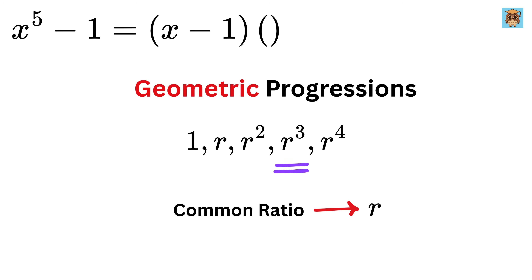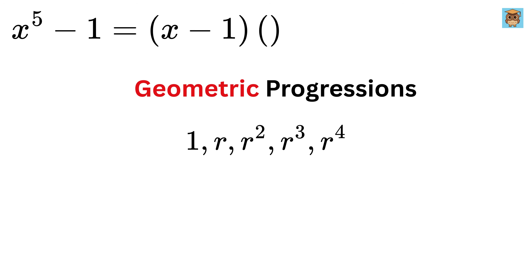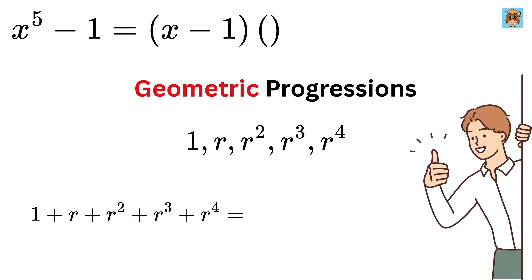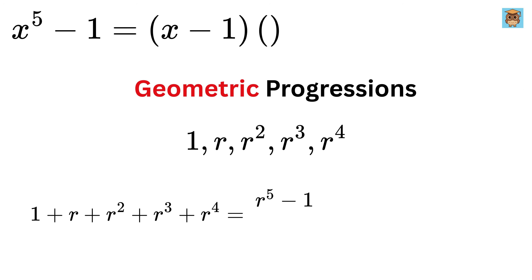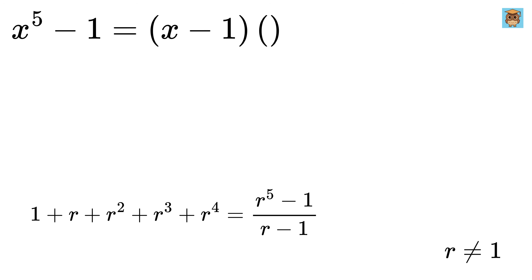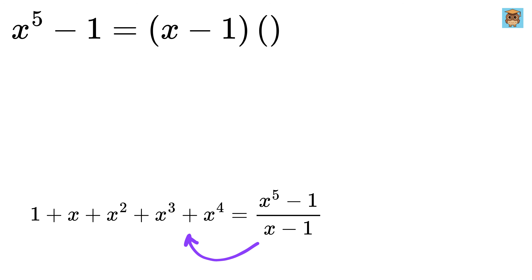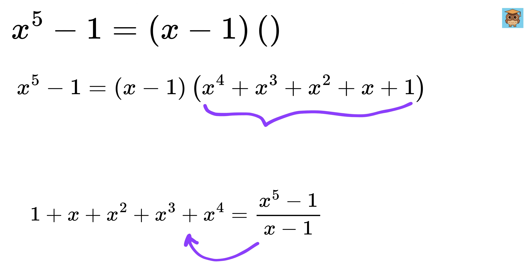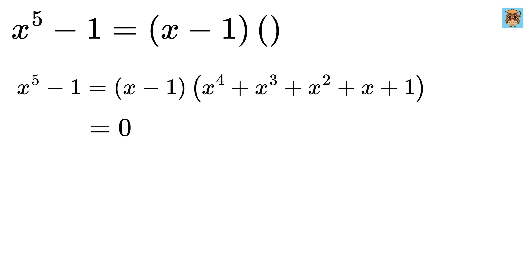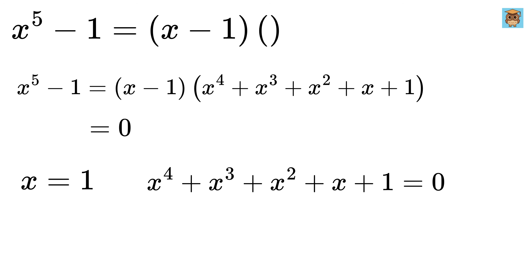We get the next term by multiplying the current term by r. If you add all these values together, this is called the sum of a geometric series. There's a neat formula: the sum equals (r⁵ minus 1) divided by (r minus 1), as long as r is not equal to 1. Amazingly, if we replace r with x and multiply through by (x minus 1), we get x⁵ minus 1 as (x minus 1) times a degree-4 polynomial. Setting this to zero gives x equals 1 and the quartic polynomial equals 0.